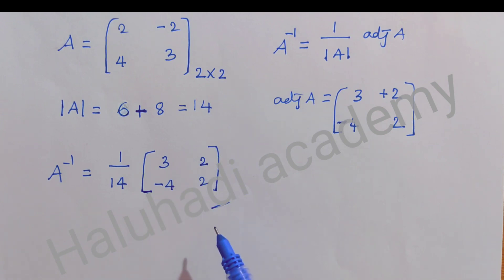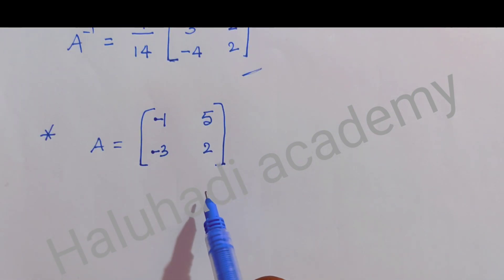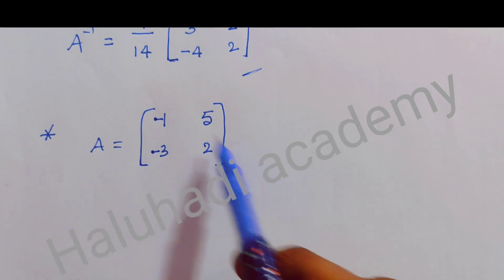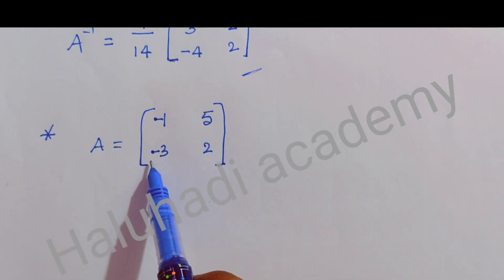One more example I am taking. Matrix A is equal to -1, 5, -3, 2. And order of this matrix is 2×2.